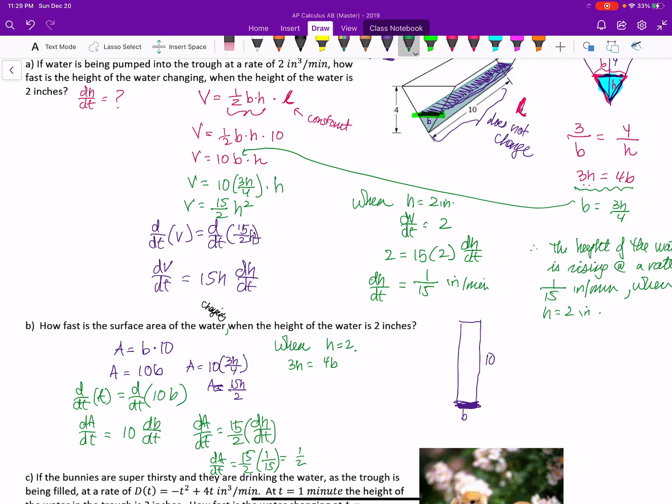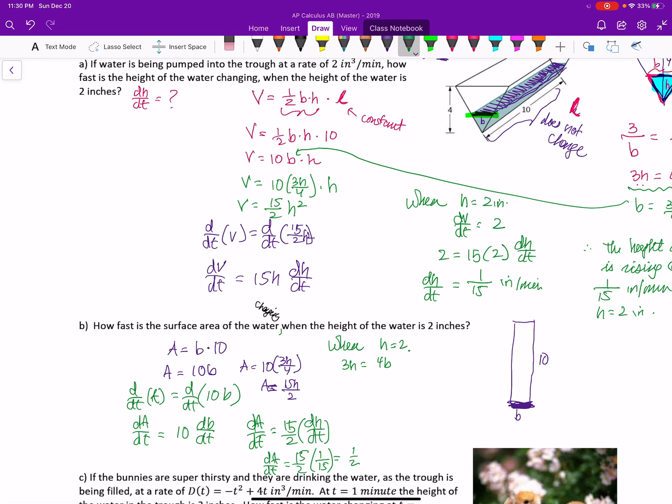So that means that the area is going to change by a half square inch per minute at that time. But let's say you didn't think of that. I also know that when h is, I'll just leave it with b. I can take the derivative with respect to time of each of these now. So we get 3 dh/dt is equal to 4 db/dt. And I know what dh/dt was at that time. So it was 3 times 1 over 15 is equal to 4 db/dt. So db/dt would then at that time equal 1 over 20. And then I could take that 1 over 20 and substitute in for db/dt. So 10 times 1 over 20 is 1 half. We get the same answer either way.